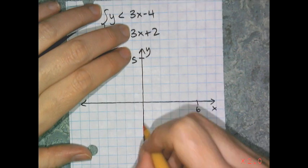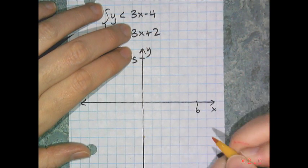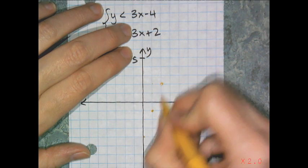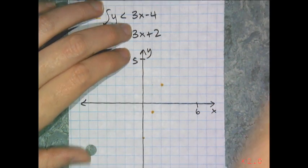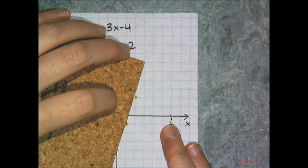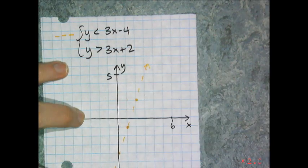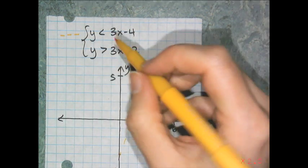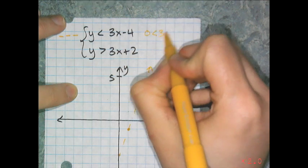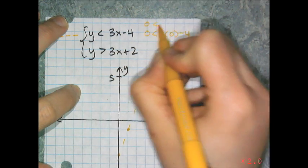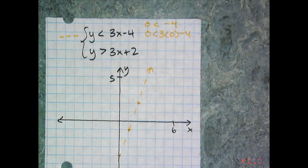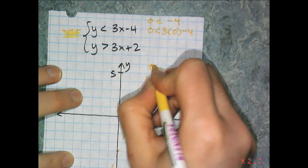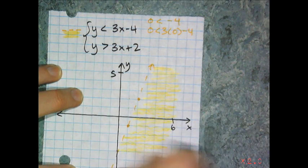3x minus 4, the boundary line has a y-intercept down here at negative 4 and a slope of 3 means I go up 1, 2, 3 spaces over 1. So I have my dots and I'm going to connect them with a dashed line. And once I have the boundary line drawn in, I need to choose what region I'm going to be shading in. So I can test 0, 0. And if I test 0, 0, I have 0 is less than 3 times 0 minus 4, or 0 is less than negative 4, which is false because 0 is greater than negative 4. That means that this line is going to be shade below.